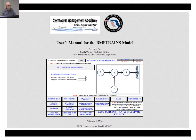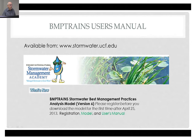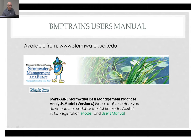The version we're talking about is version six. The reason I mention version six is that we constantly update the model depending on the needs of the professional community and the type of questions we get. We may have more BMPs to add in the future, so you're encouraged to go back to stormwater.ucf.edu to see if there's a new version. You're also encouraged to look at the user's manual and examine the help buttons within the BMP Trains model.